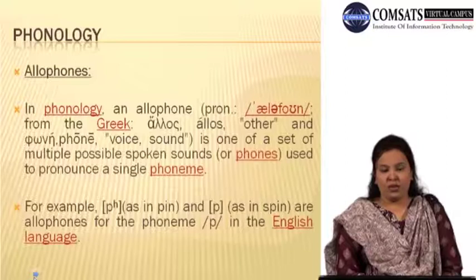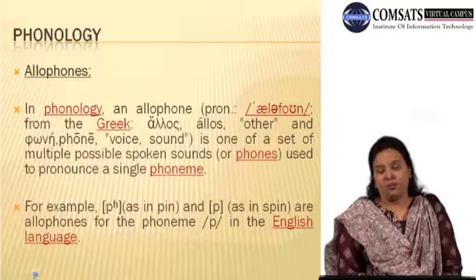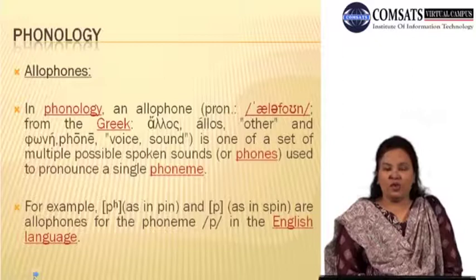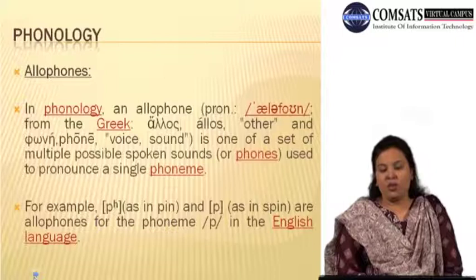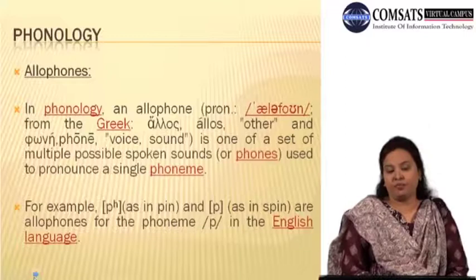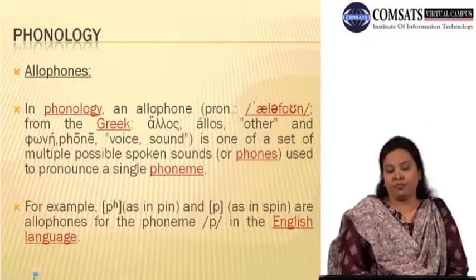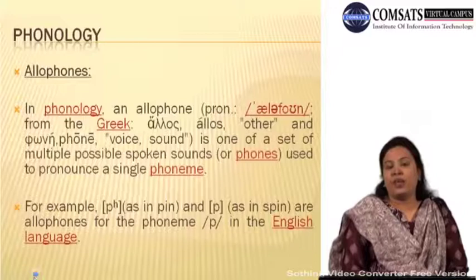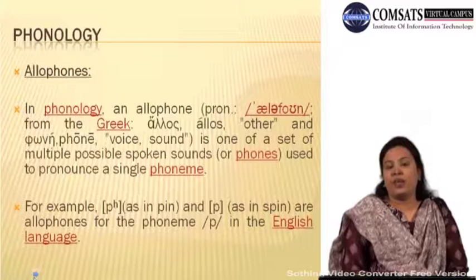Next terminology is allophones — another term used in phonetics and phonology. 'Allophone' is a combination of two words: 'allo' meaning other, and 'phone' meaning sound. So allophone means 'another sound,' or more precisely, it is one of a set of multiple possible spoken sounds or phones used to produce a single phoneme. Out of one phoneme we can get two phones, and those two phones out of one phoneme are known as allophones.